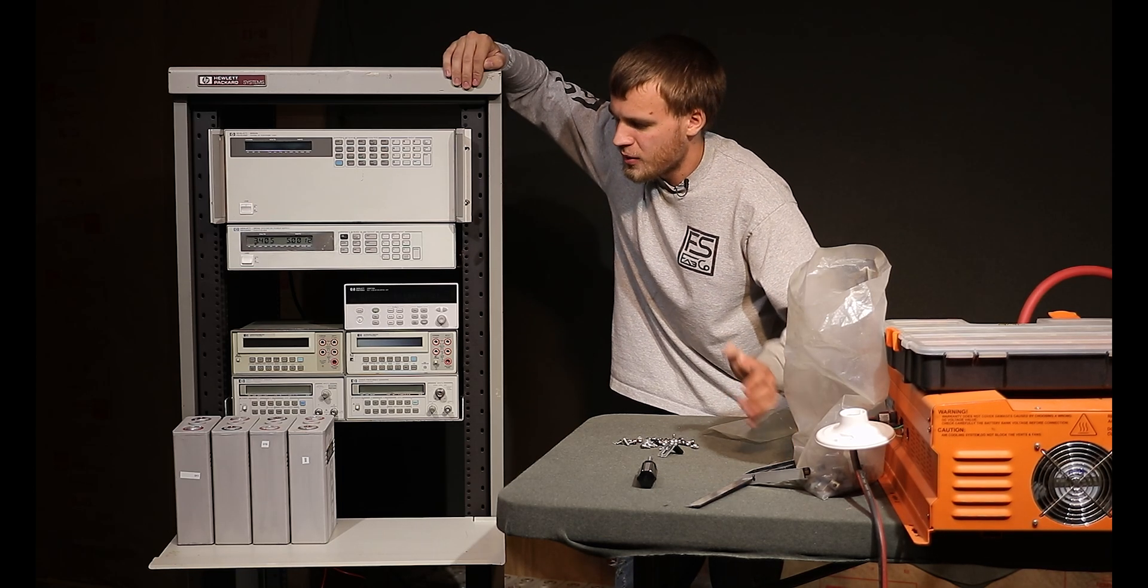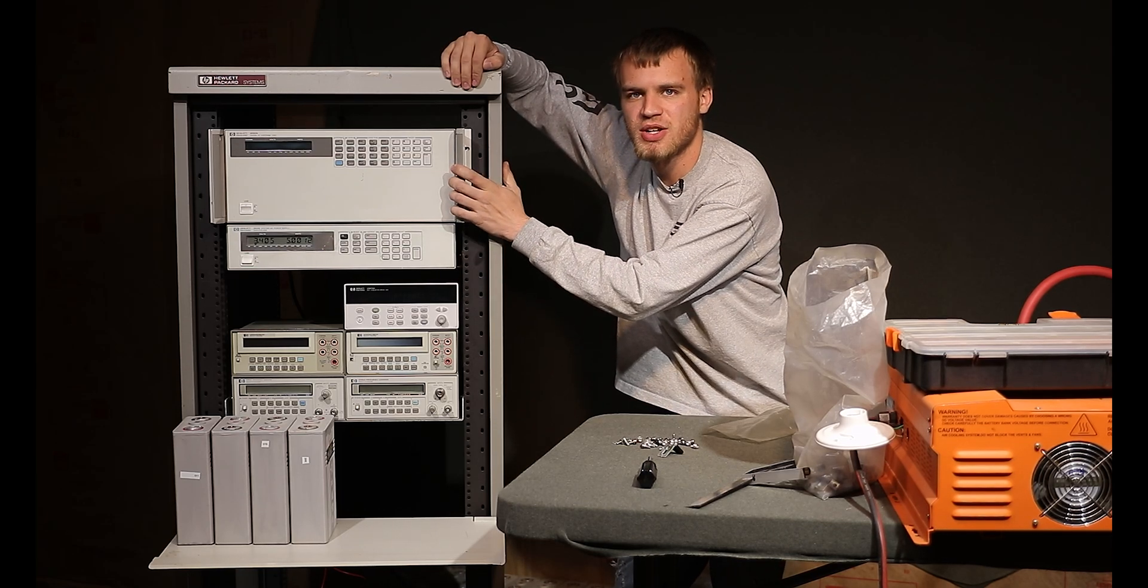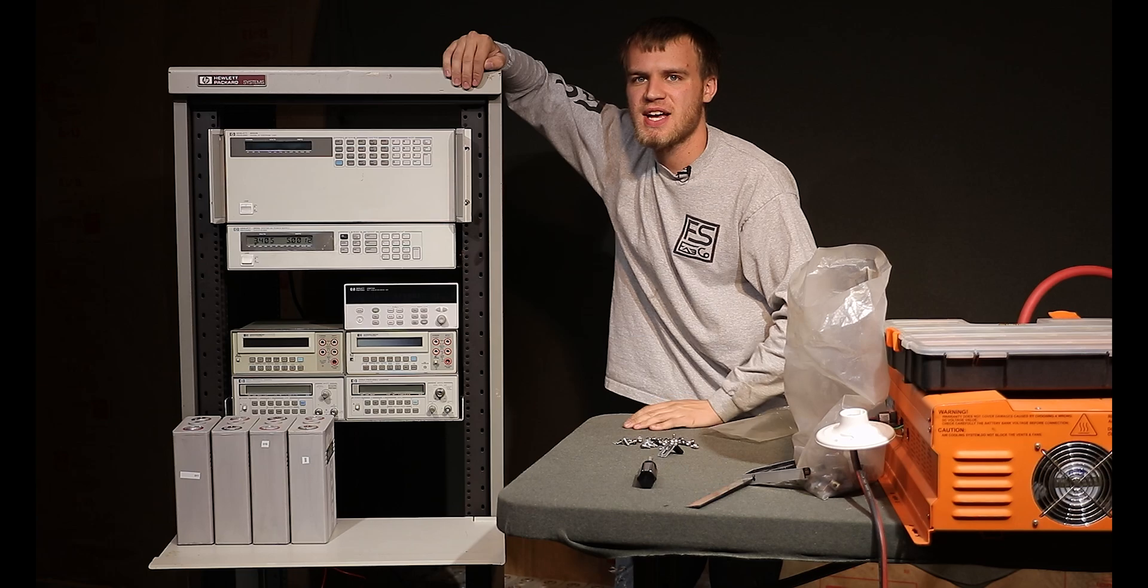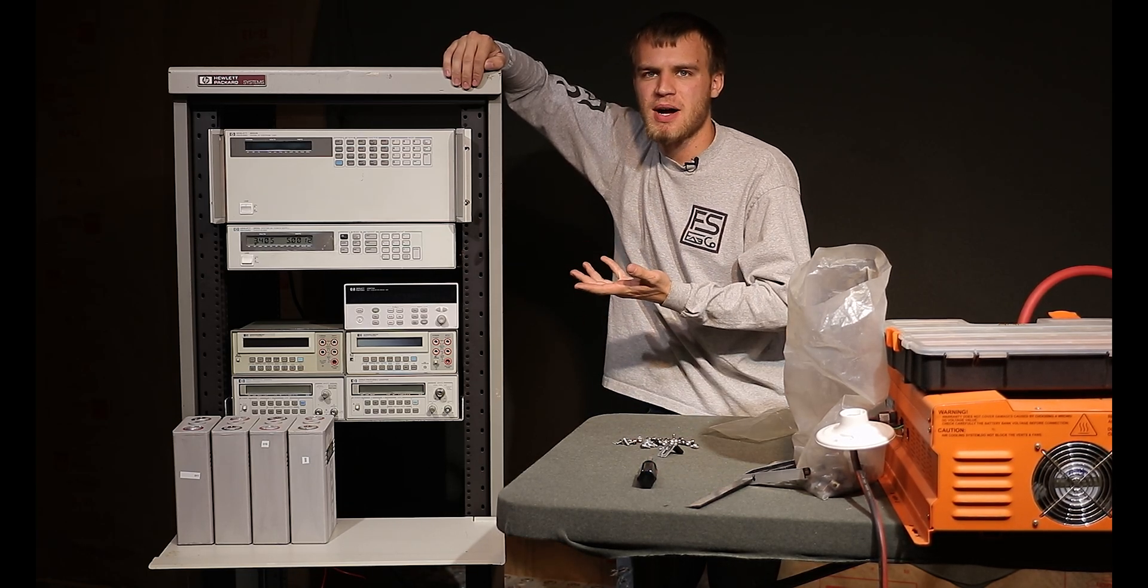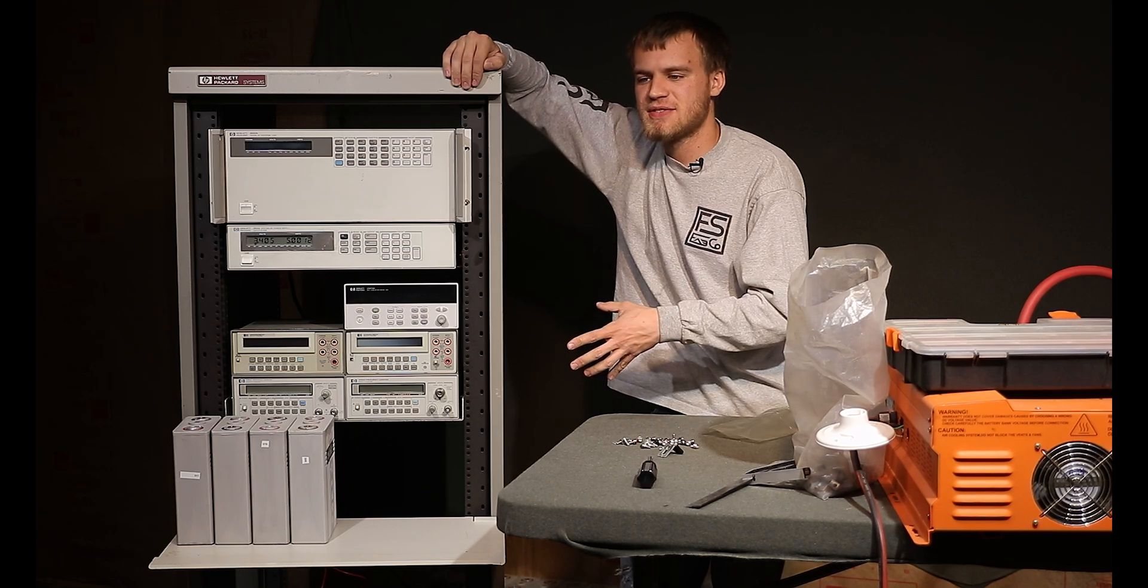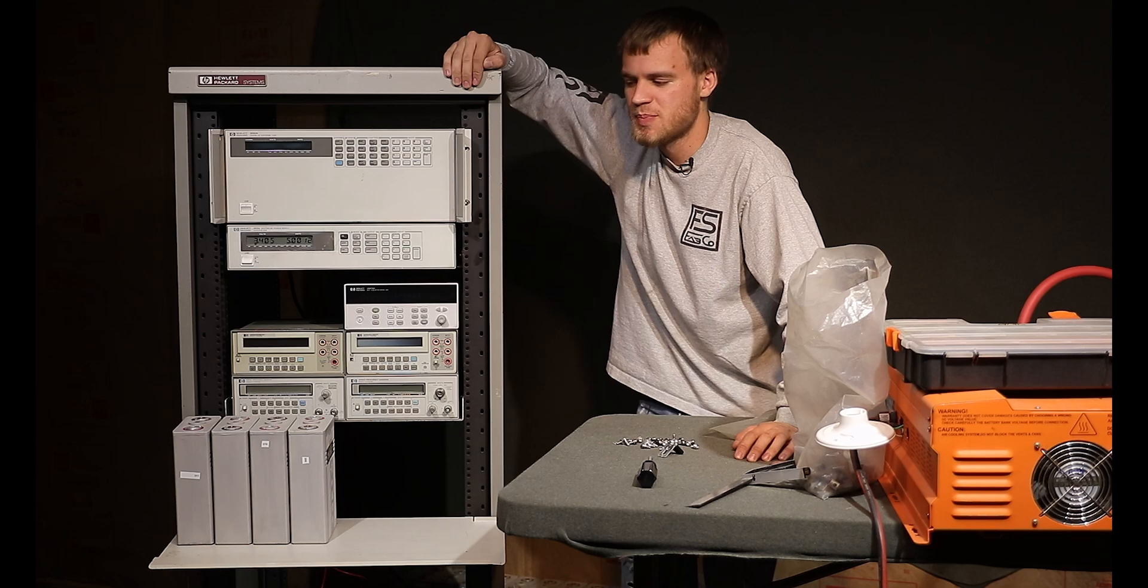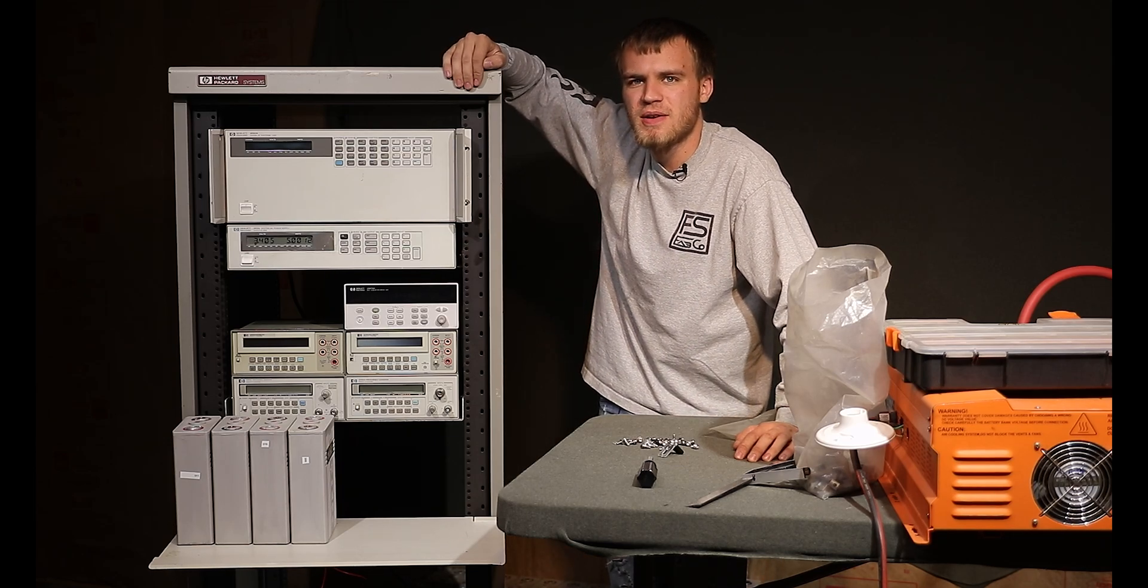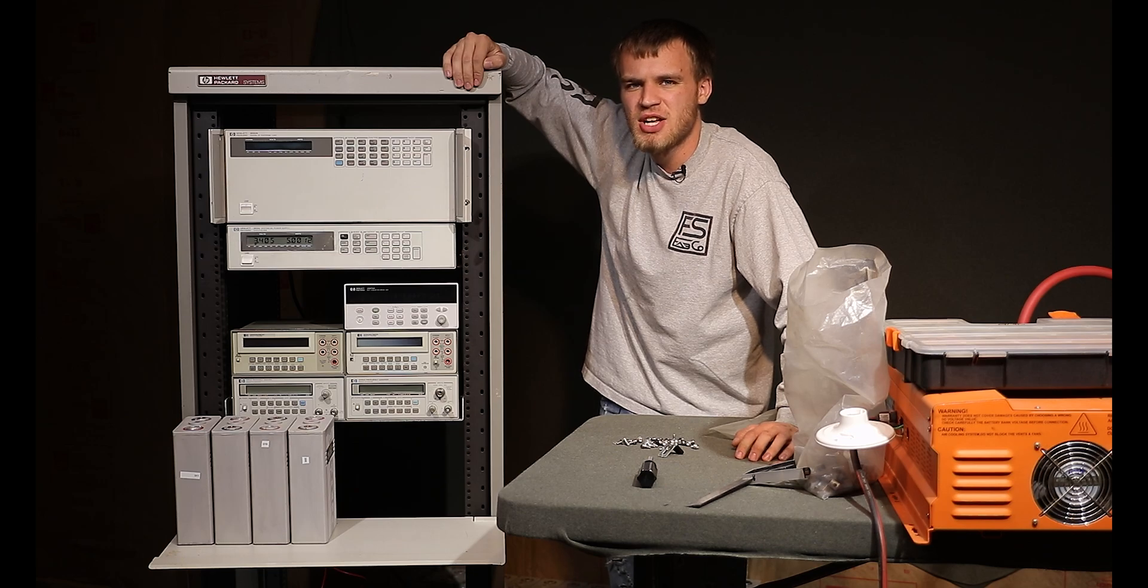So to do that we're going to use the power supply to charge things up. We're going to use the electronic load to do a capacity test to get our baseline and then we'll charge it back up and connect on the active cell balancers and do again a capacity test and from there we can figure out how many amp hours difference we get using active cell balancers.